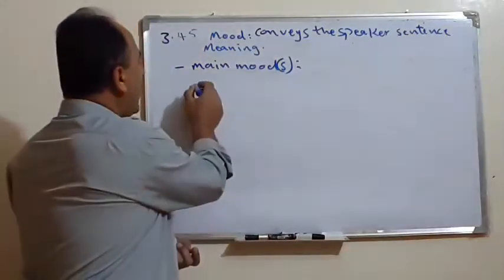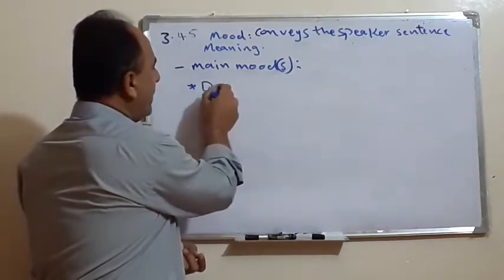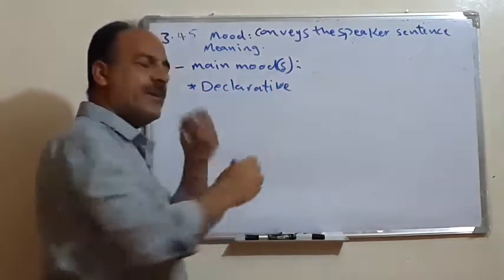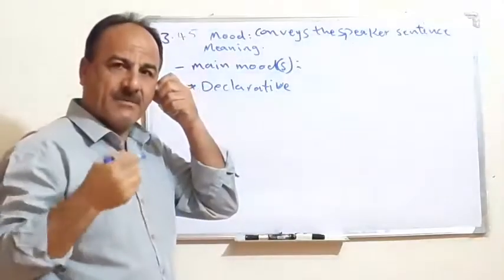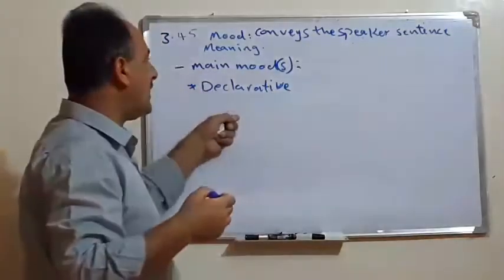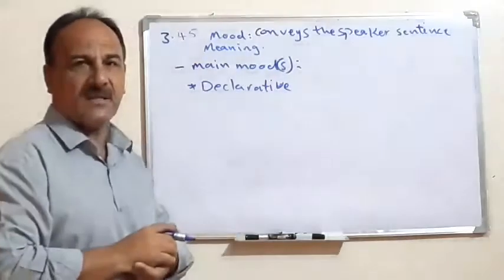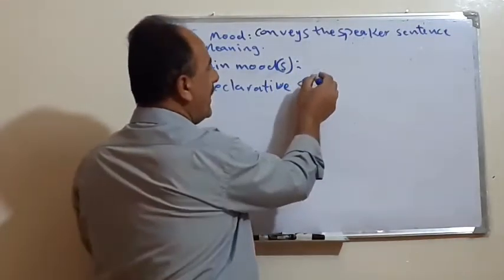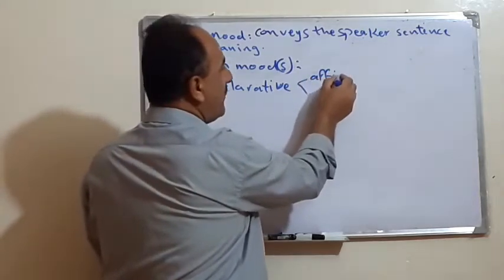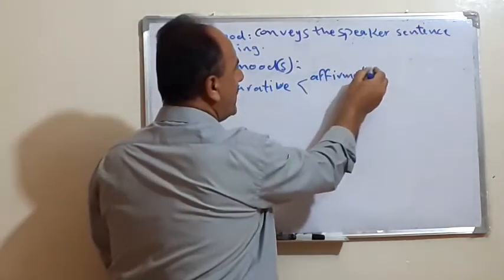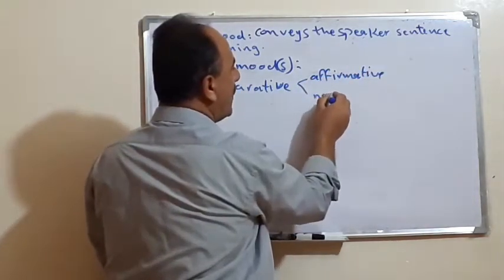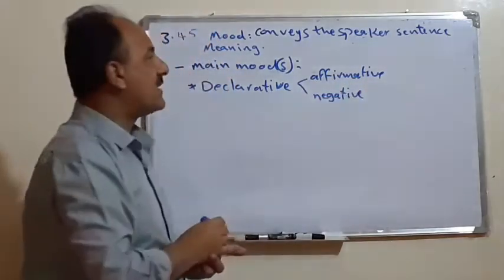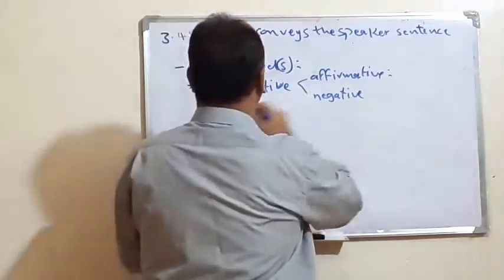The first type is what we call declarative — sometimes called a statement by some grammarians. Declarative can be divided into two types: the first one is affirmative, and the second one we call negative statement.